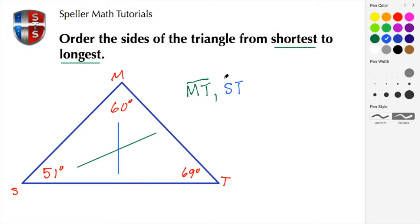And then of course the last one has to be the largest angle. In this case, this angle is 69 degrees, and that 69 degrees corresponds to the opposite side's length. Since that's the largest angle, the opposite side's length has to be the largest length, and we're going to use MS for that one.